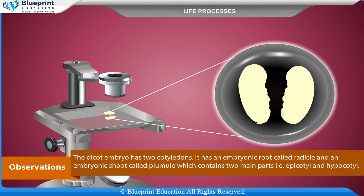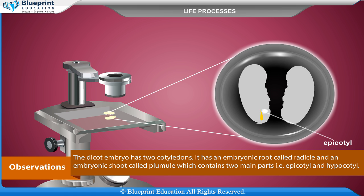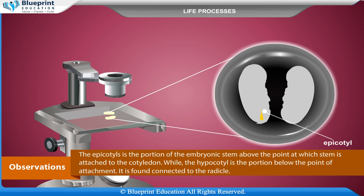Observations: The dicot embryo has two cotyledons. It has an embryonic root called the radical and an embryonic shoot called the plumule, which contains two main parts: the epicotyl and the hypocotyl. The epicotyl is the portion of the embryonic stem above the point at which the stem is attached to the cotyledon, while the hypocotyl is the portion below the point of attachment, found connected to the radical.